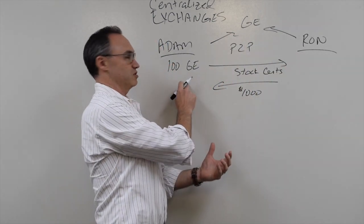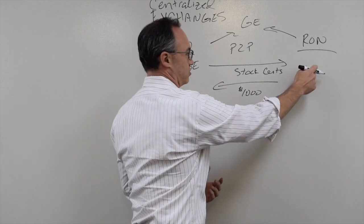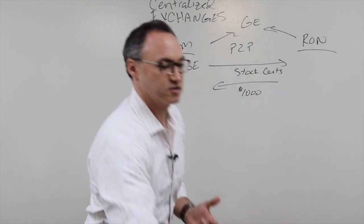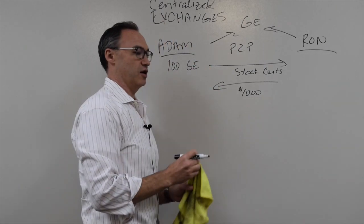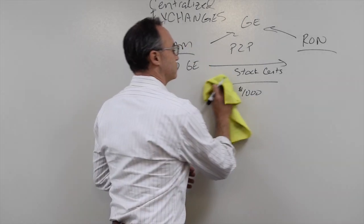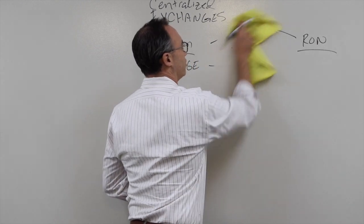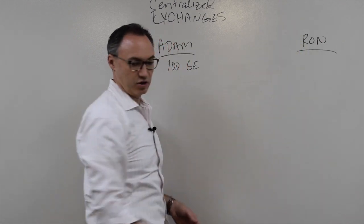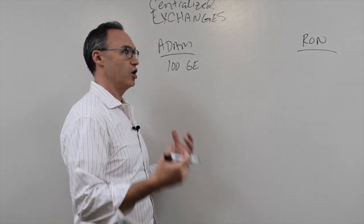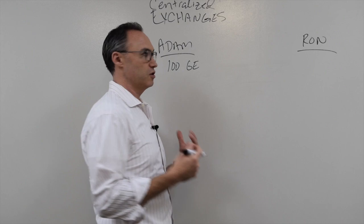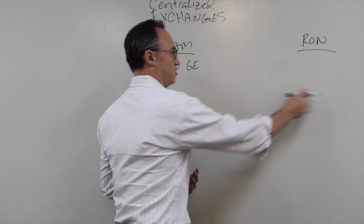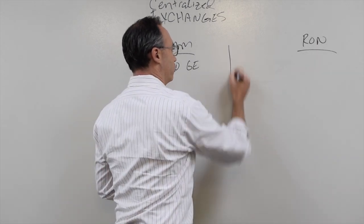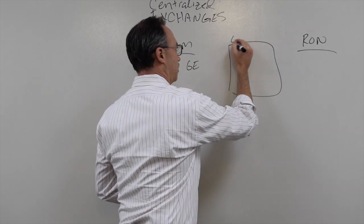If you have millions and millions of people who own stock and millions and millions of people who want to buy it, this transaction obviously doesn't work. It's not safe, it's not secure, it's not efficient. So you then develop markets. You develop exchanges. An exchange would be some sort of central point where everyone who has stock that wants to sell and people who have money that want to buy stock can come together.